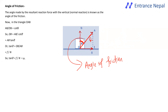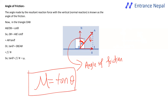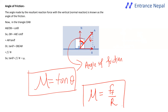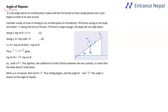The coefficient of friction μ equals tan θ, where θ is the angle of friction. For an inclined plane, the angle at which a body just begins to slide is the angle of repose, equal to α. The condition is that μ = tan α.